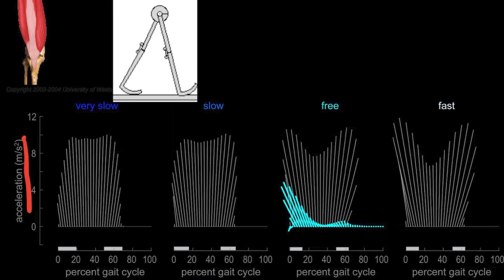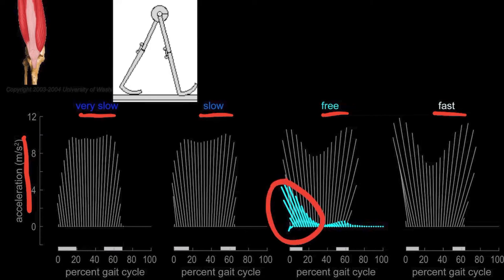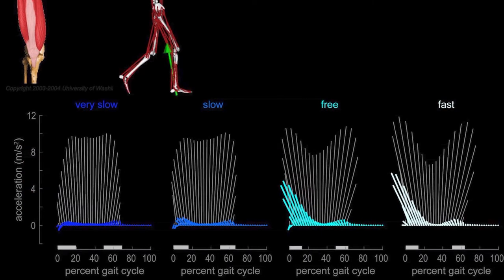So what I'm plotting here is the acceleration of the mass center during very slow, slow, free, and fast walking. So let's look first at just free speed walking. And we've seen this before. So here's the total, the acceleration looks a lot like the ground reaction force. And VASTI is on during early stance. It produces body weight support and backward acceleration. In fast walking it does more of the same. Slightly bigger. You see the ground reaction forces are bigger.